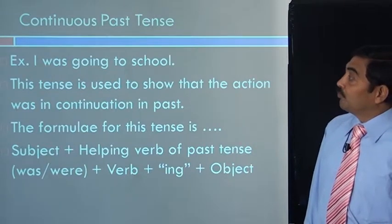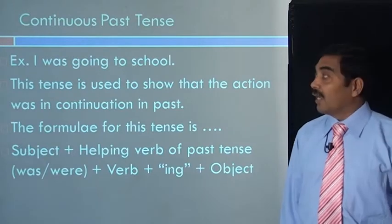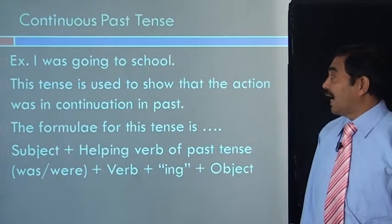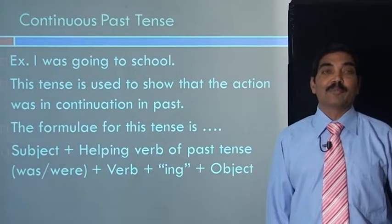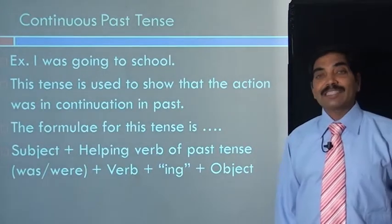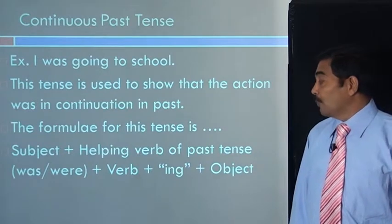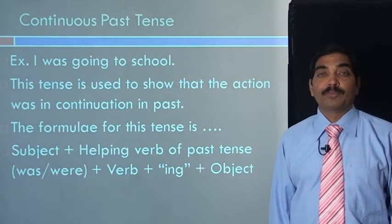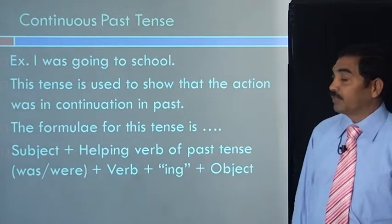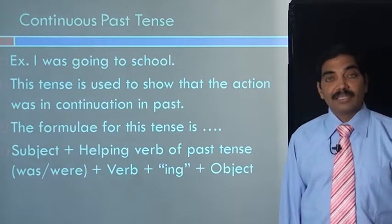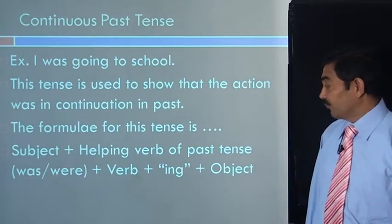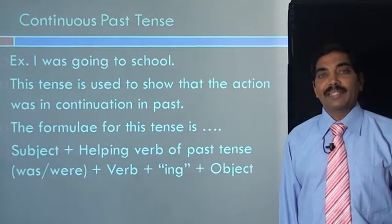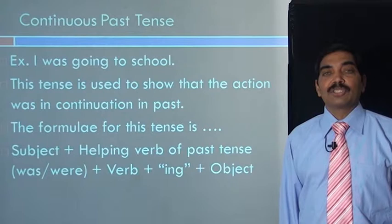Let us go to the sixth form of the tense: continuous past tense. The example is: I was going to school. This tense is used to show that the action was in continuation in past. The formula for this tense is subject plus helping verb of past tense — that is was or were — plus verb plus ing, plus object. The original form of verb is go, and ing is applied to the verb. Remember, in every continuous tense, ing is a must. Without verb plus ing, continuous tense is never possible.